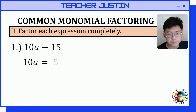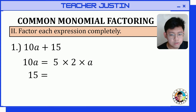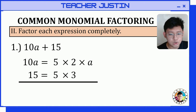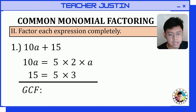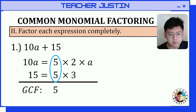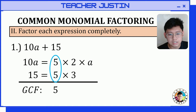10a has a factor of 5 times 2 times a. Now let's get the prime factors of 15, which are 5 times 3. Then let's get the greatest common factor of these two terms. The common factor of 10a and 15 is 5, so our greatest common factor is 5.